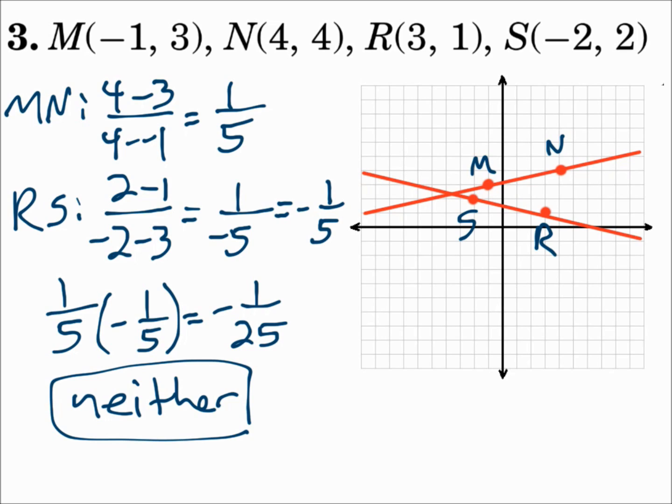Remember: if the slopes are the same, they're parallel. If the slopes are negative reciprocals, they're perpendicular. Otherwise, it's neither.